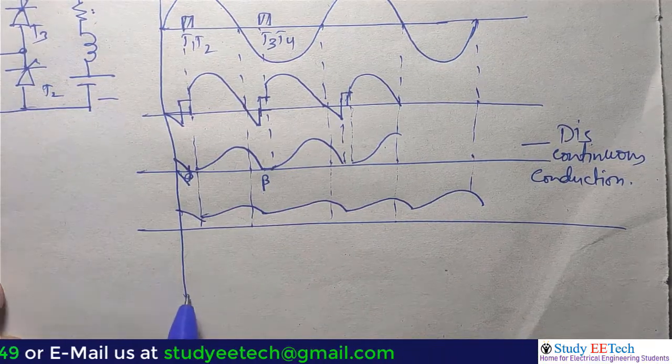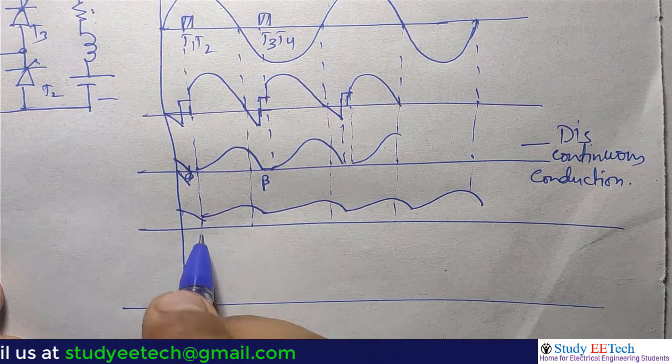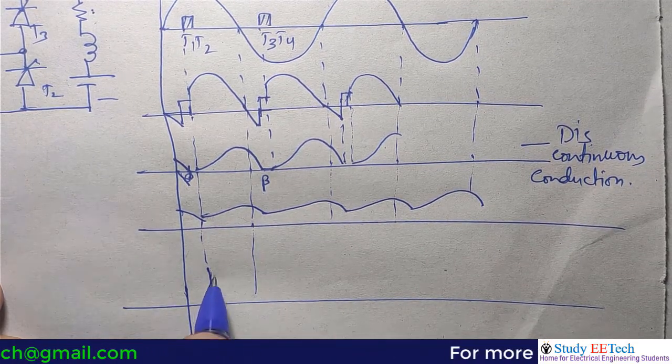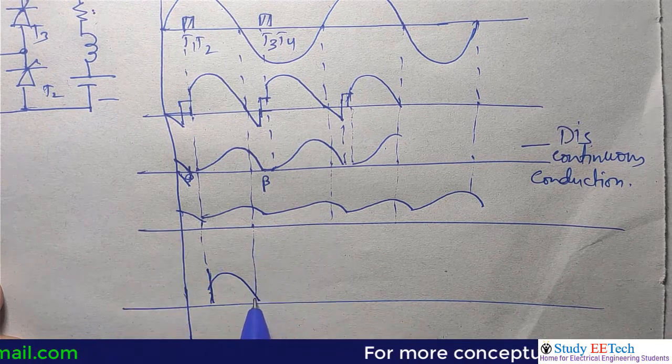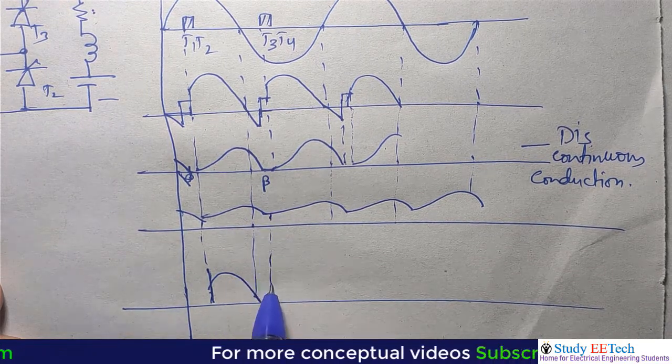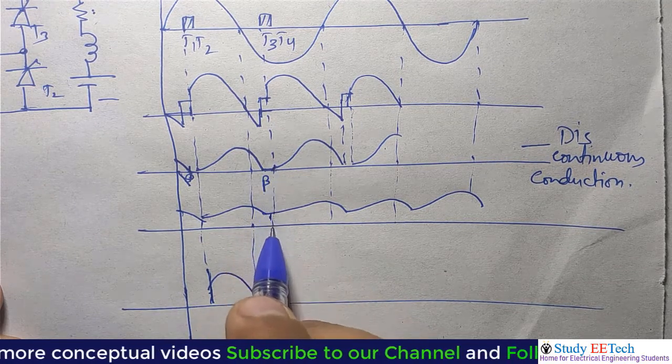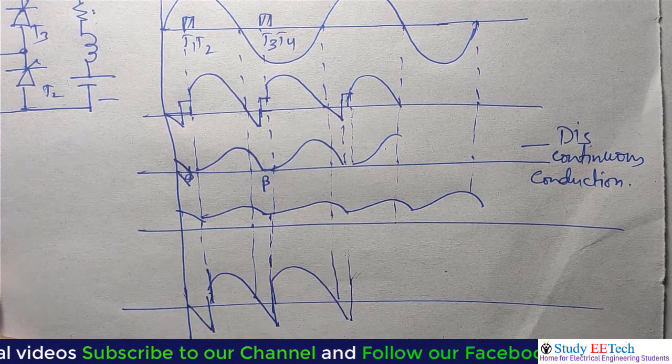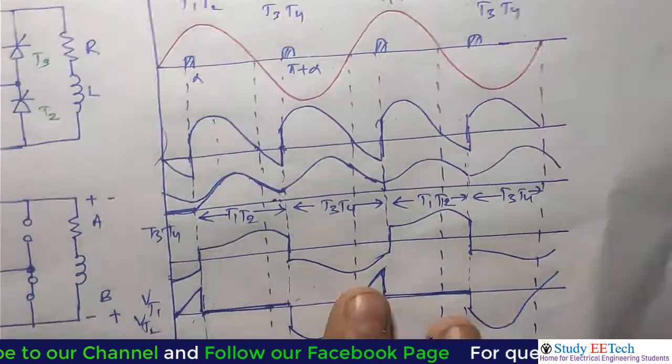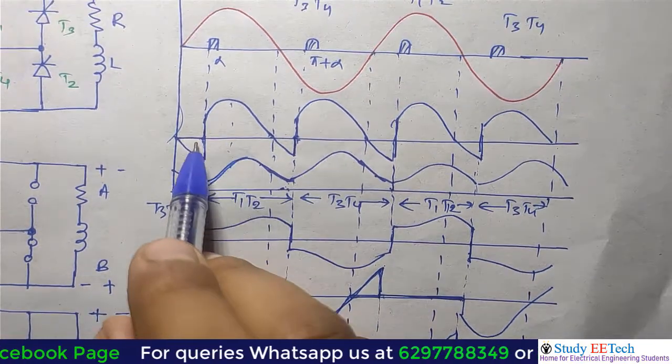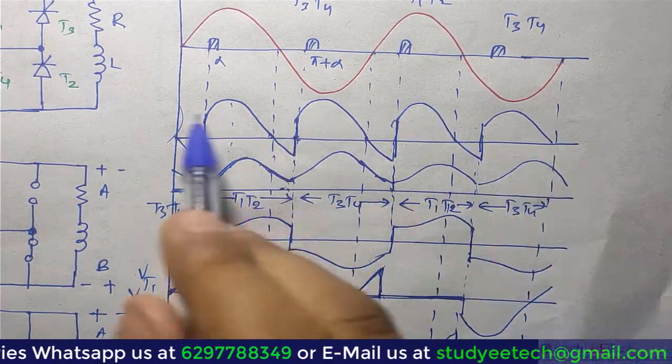In case of continuous conduction, the waveform we will get will be the current waveform and voltage waveform will be something like this T3, T4. So basically what I am saying is that in case of continuous conduction there is no zero current duration. So the waveform will be exactly like the R-L load's continuous conduction.